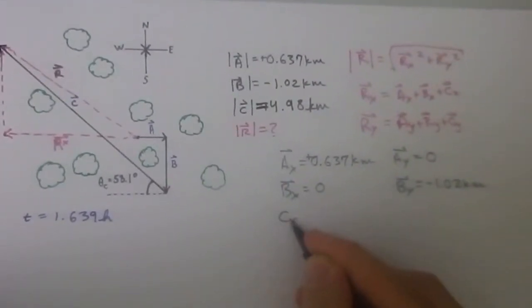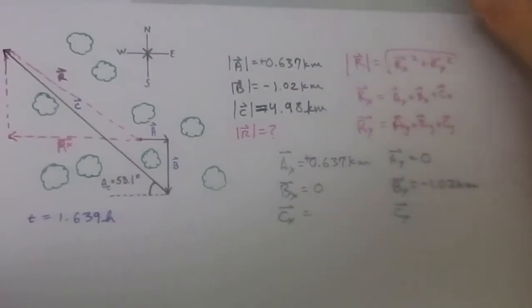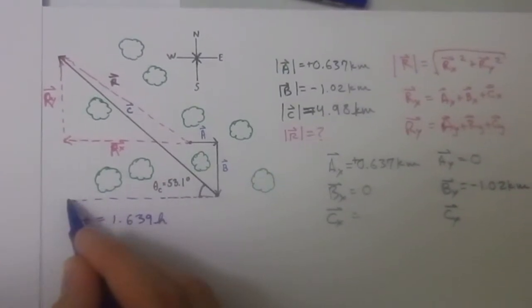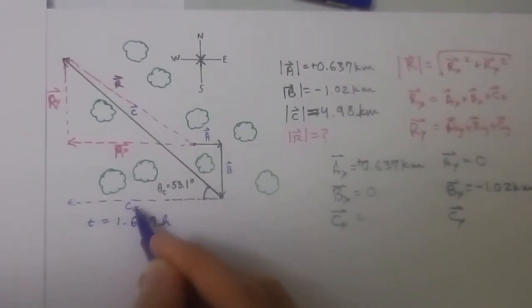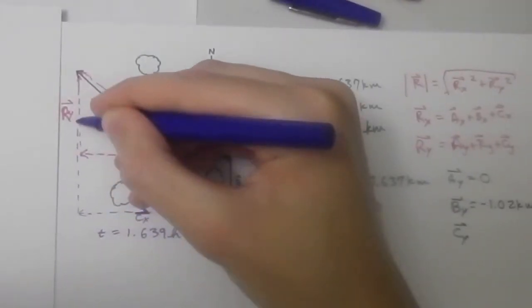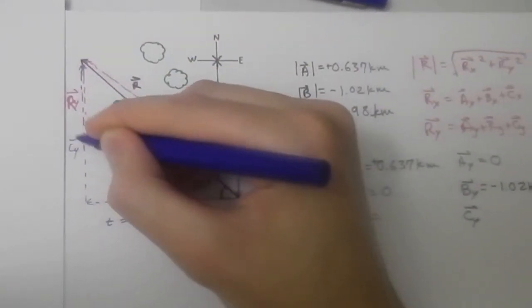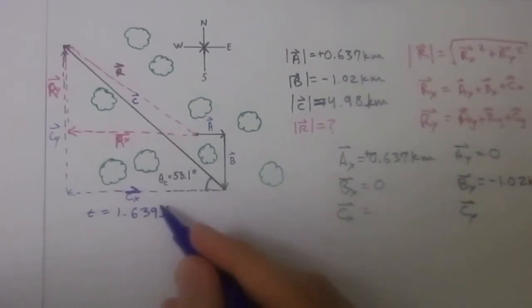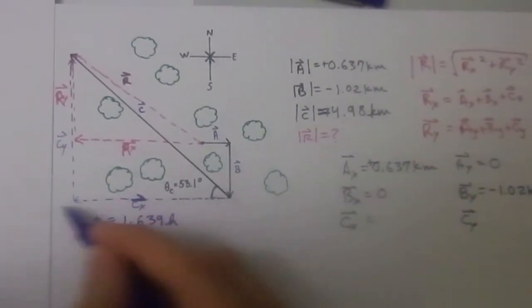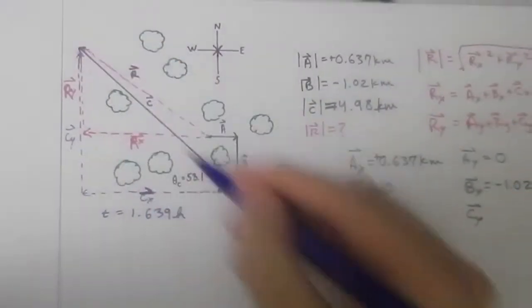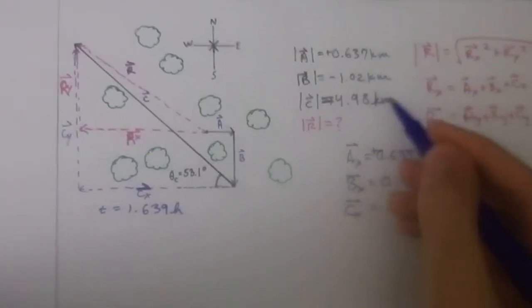Now we need to find the x component and y component of vector c. We draw in the components. The x component of vector c goes to the left, and the y component goes upward. We're not given these side lengths — we're given the hypotenuse. The hypotenuse equals 4.98 kilometers, so we have to use trigonometry.